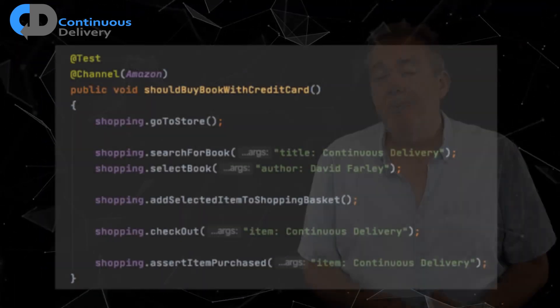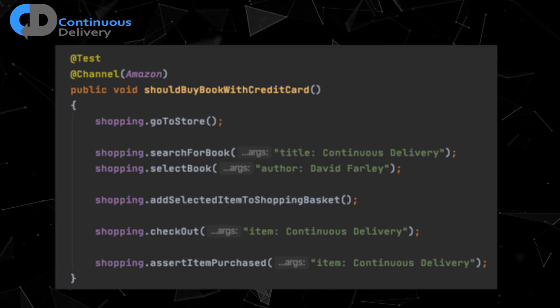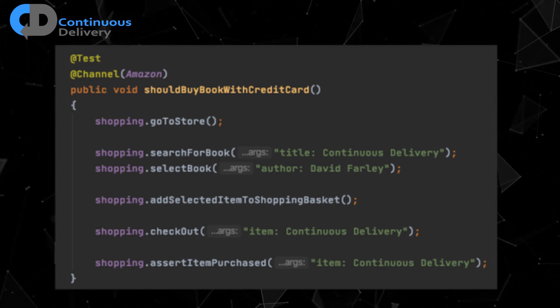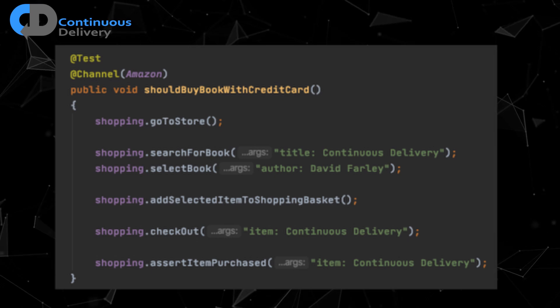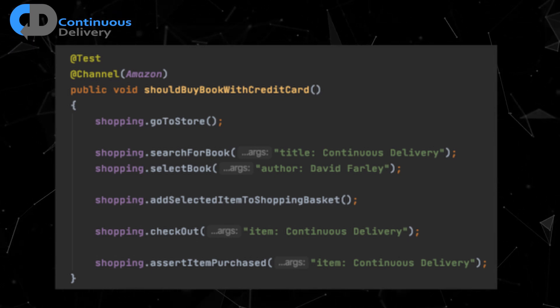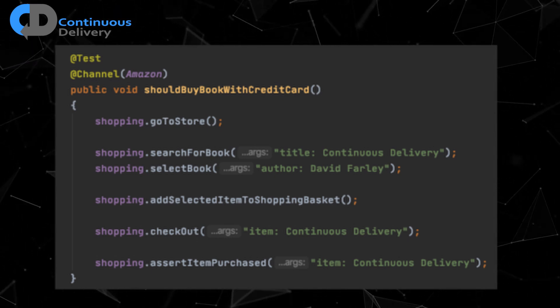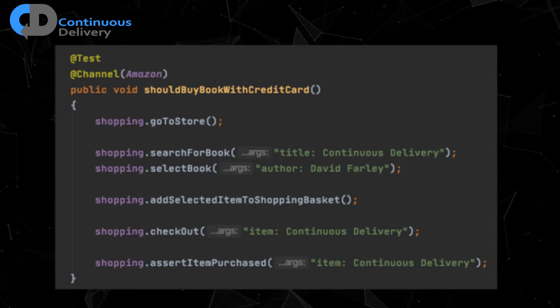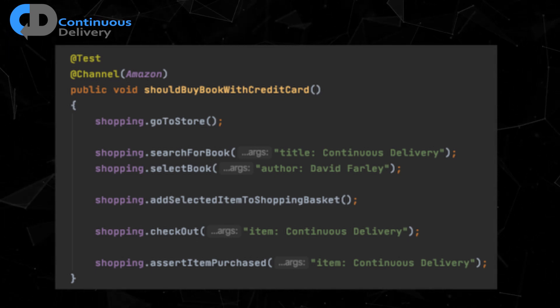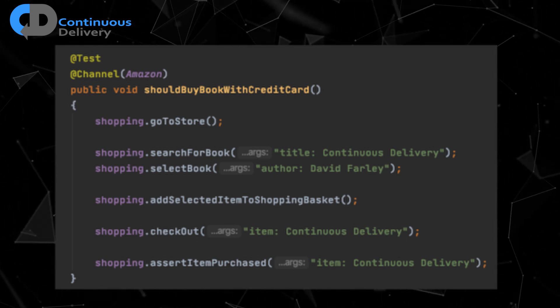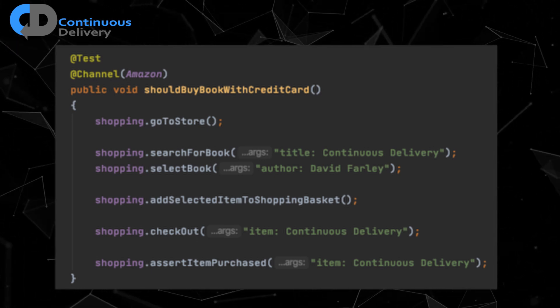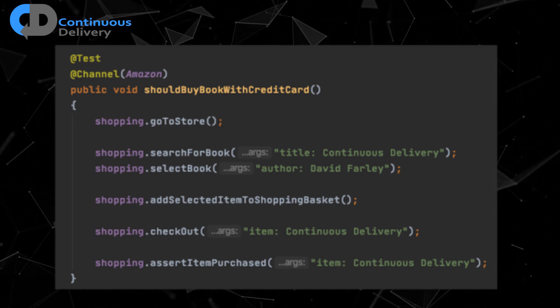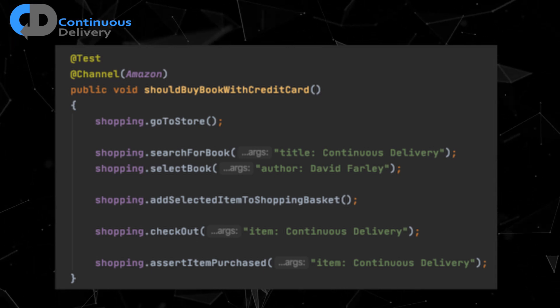Here's an example of the executable specification. We're going to search for a book called Continuous Delivery. We're going to select a book from the search list because there will probably be more than one book with continuous delivery in the title. So, we're going to look for one with the name of the author. Then we're going to add the selected book to the shopping basket. Check out. Go to the checkout and check out with that book. And assert at the end that the item has been purchased.